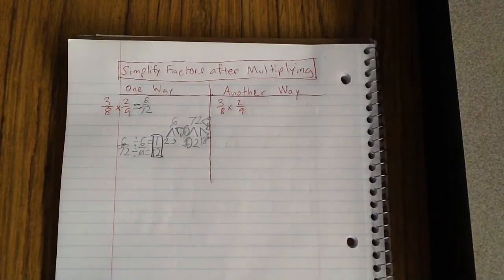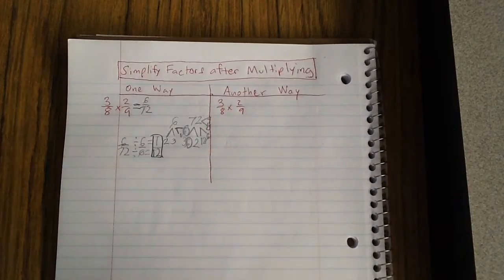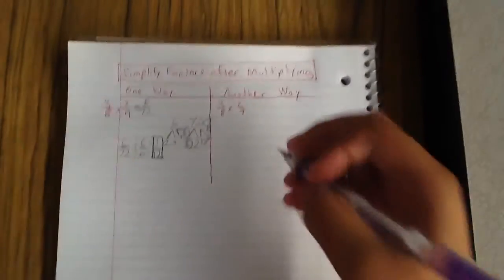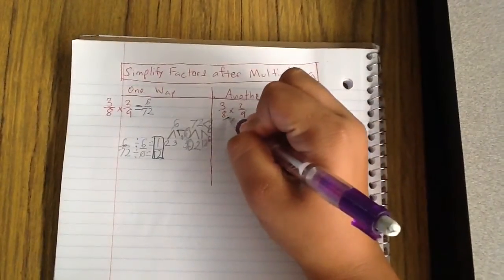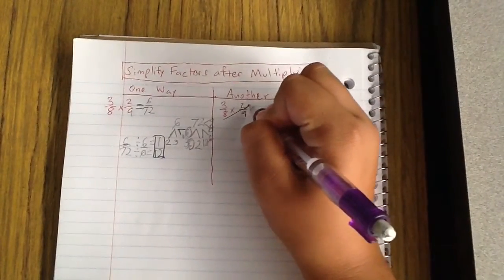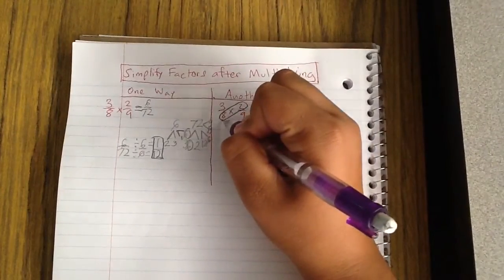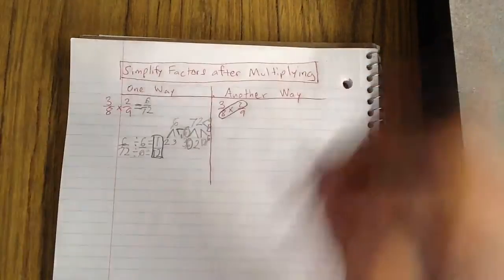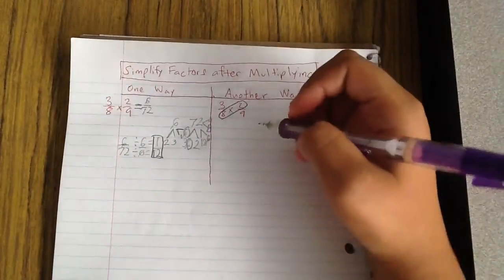Today we're going to simplify fractions after multiplying. This is another way to do it. So 8 and 2 have the same factor.